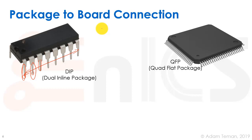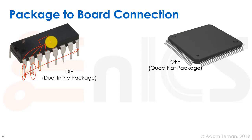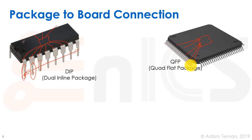A more complex package is the QFP, or Quad Flat Package. It's a square package with many pins that are bent so it's easier to solder. The chip in the middle connects to all of these pins. We have a lot more pins than the DIP, but we still have to solder each one separately to the board, which takes quite a bit of work, and there are long internal connections that have to be bonded.